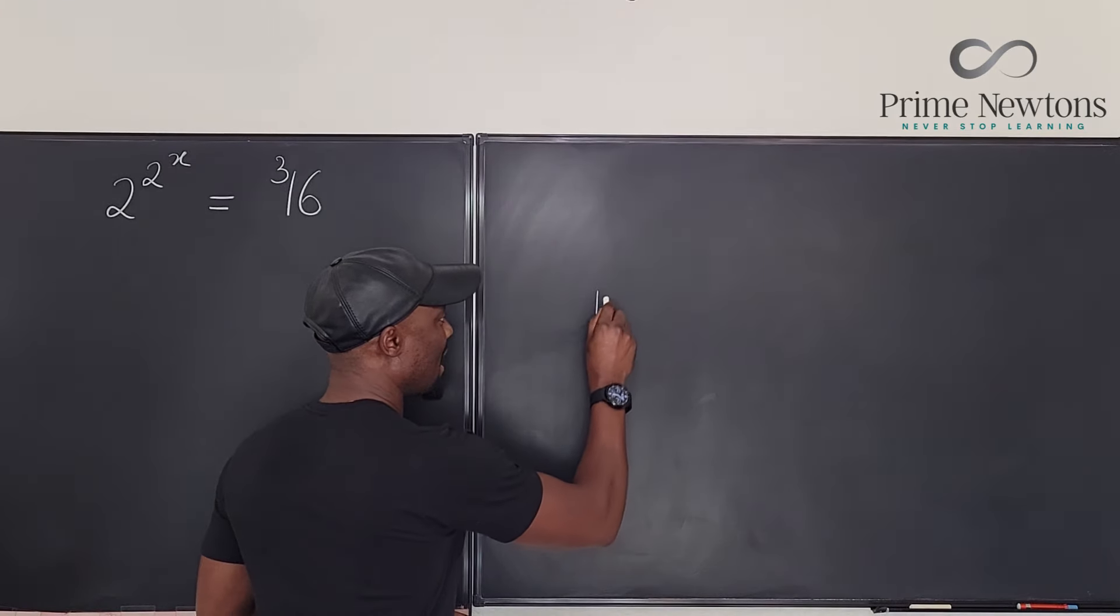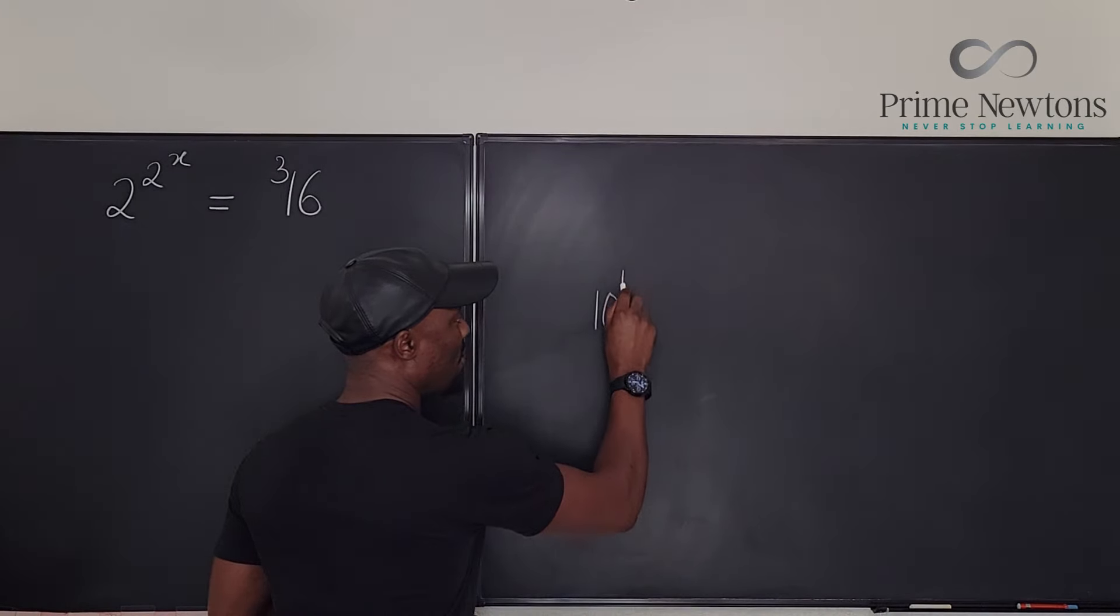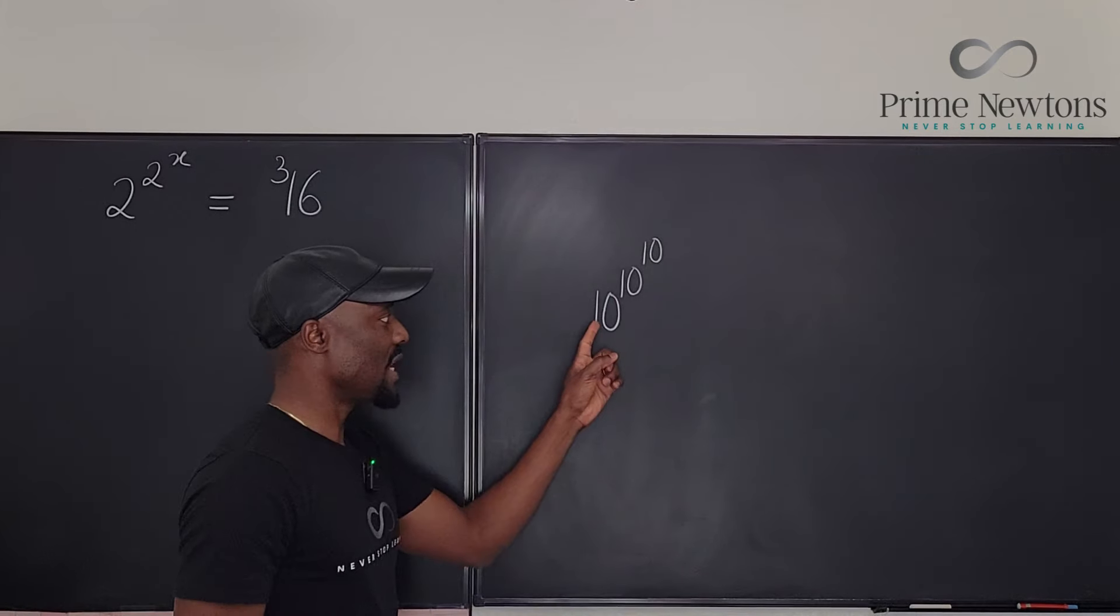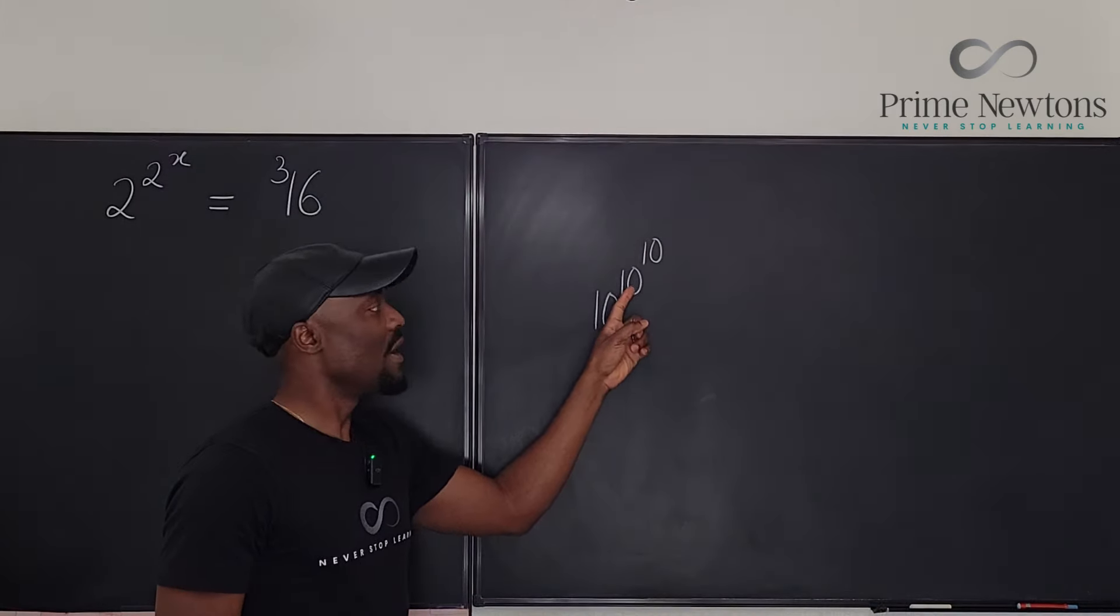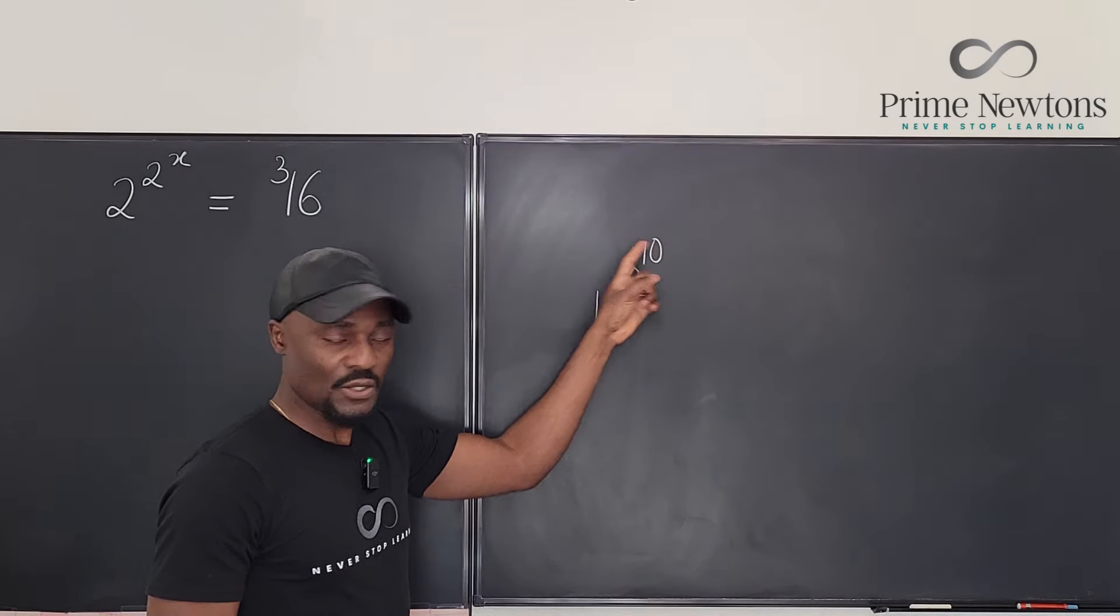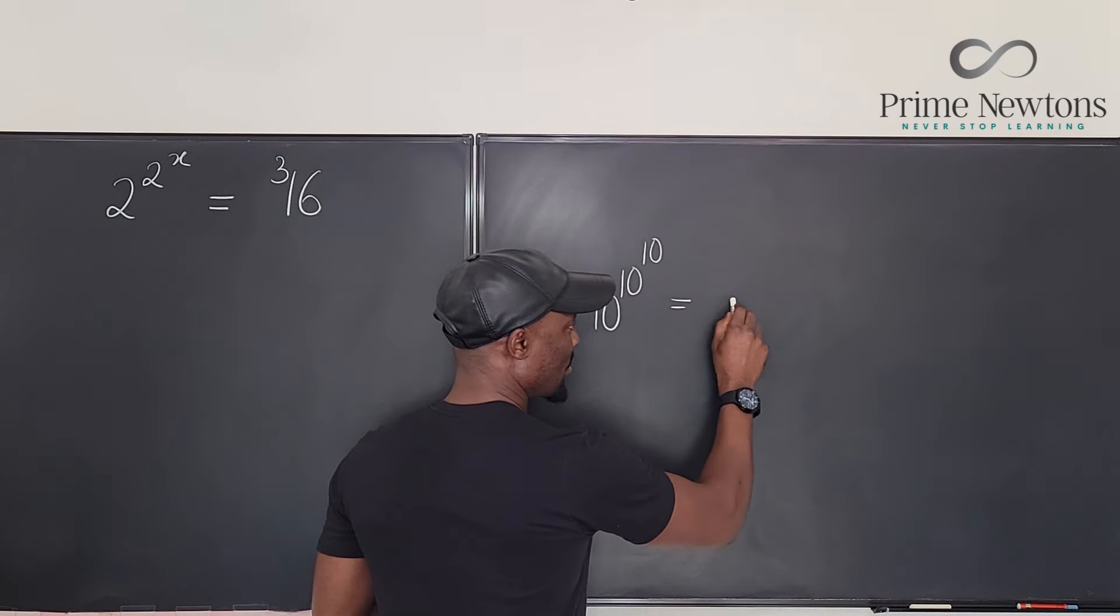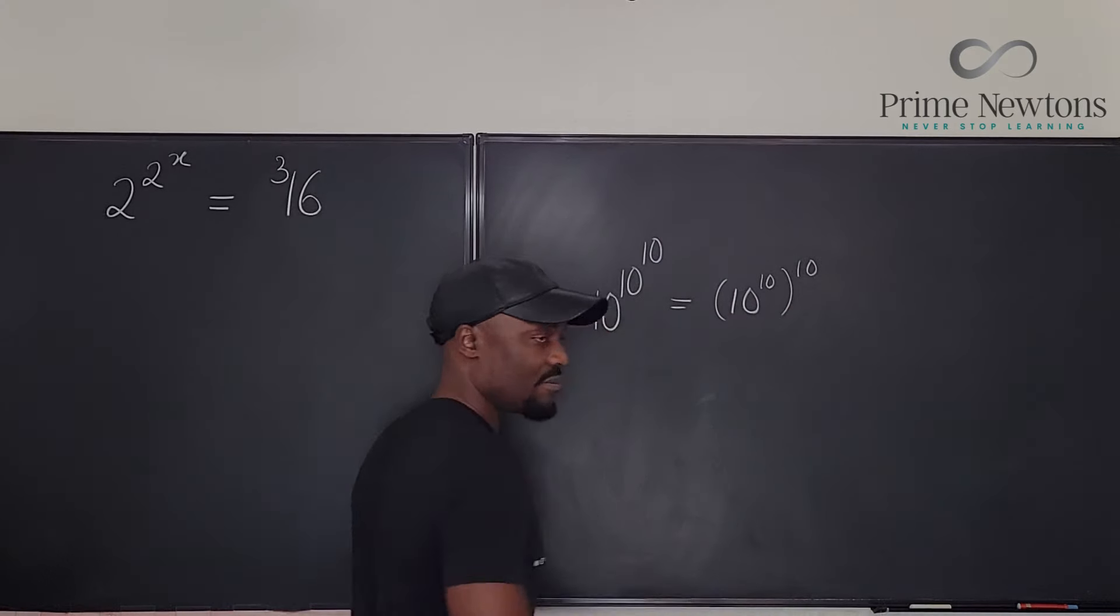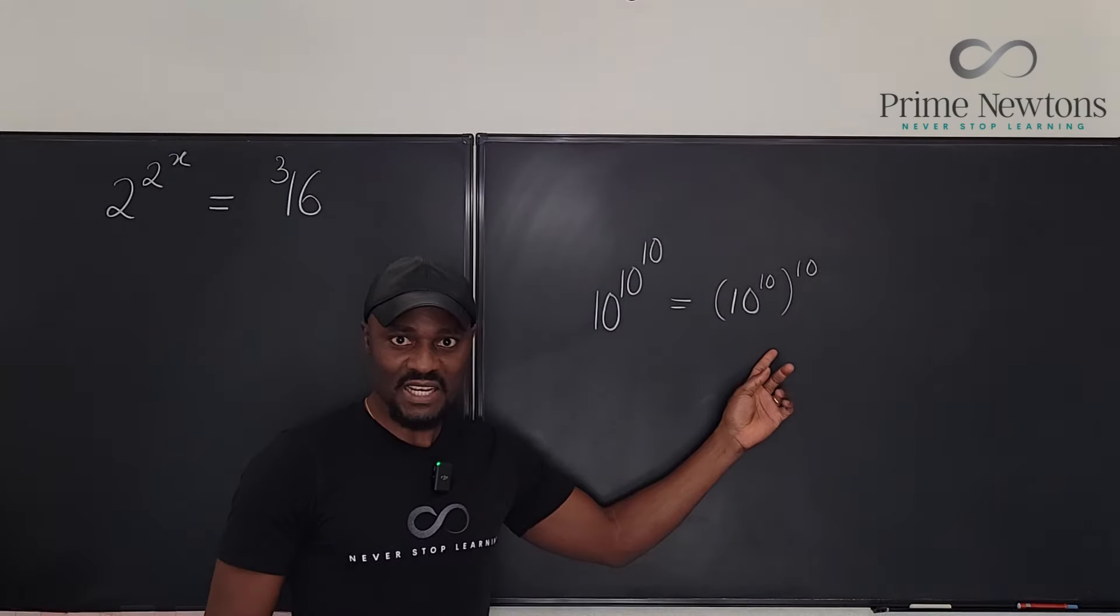So they would say when I did 10 raised to power 10 raised to power 10, it was supposed to be 10 raised to power 10 raised to power 10. So this is what they said I should have done: 10 raised to power 10 then raised to the 10th power. But this is incorrect.